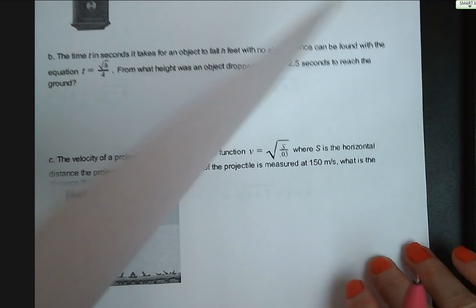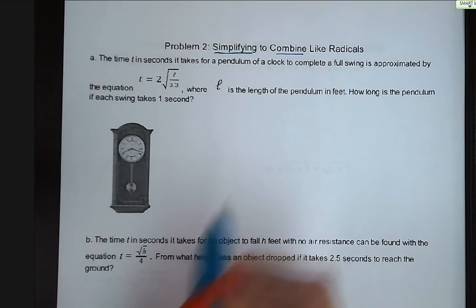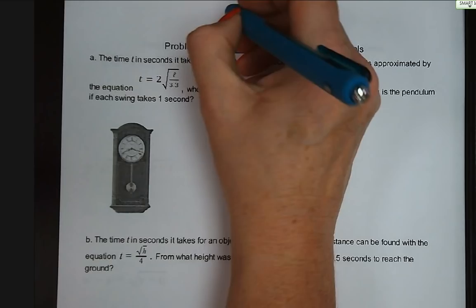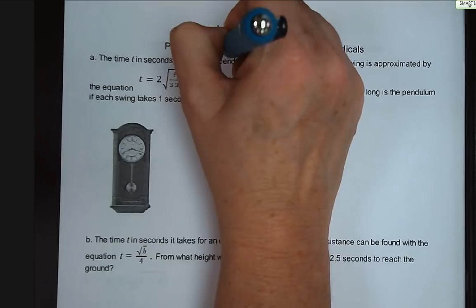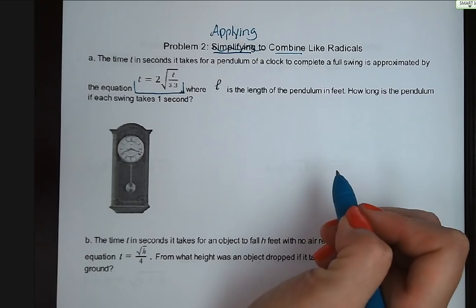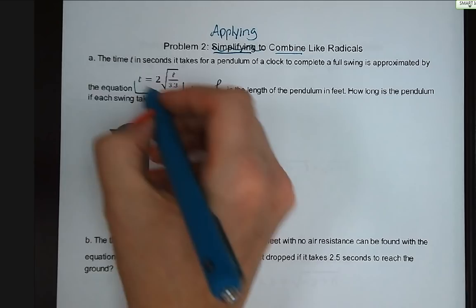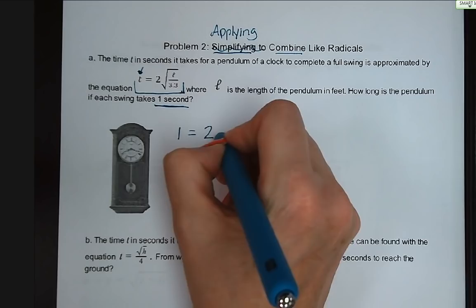Problem number two: applying these properties with real-world equations. The time in seconds for a pendulum to complete a full swing is approximated by T equals 2 times the square root of l over 3.3, where l is the length of the pendulum in feet. If each swing takes 1 second, we substitute 1 for T: 1 equals 2 times the square root of l over 3.3.